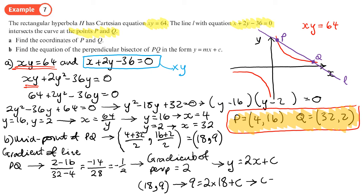If I work that out, 2 times 18 is 36, so I'm going to do 9 minus 36, which gives me minus 27. So c is minus 27. My final answer is going to be y equals 2x minus 27 for the gradient of the line, and it's in the form that they require.